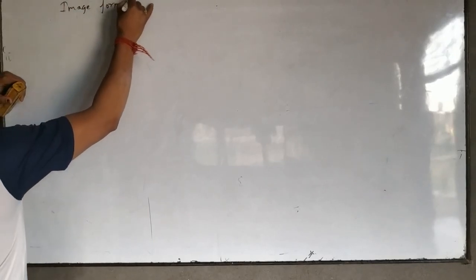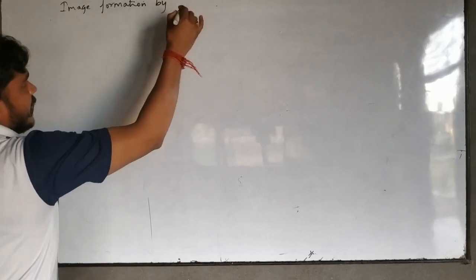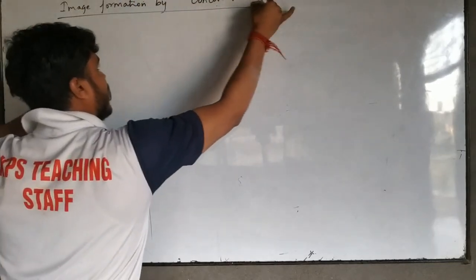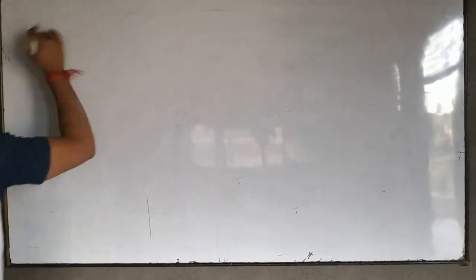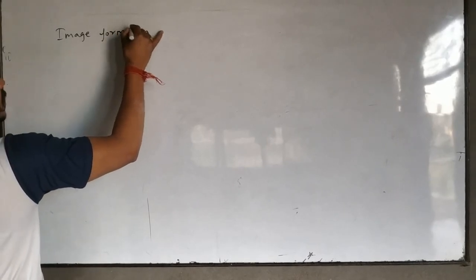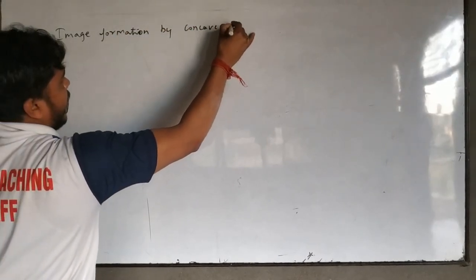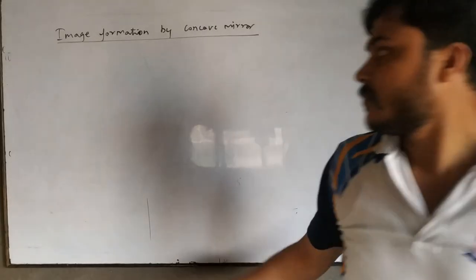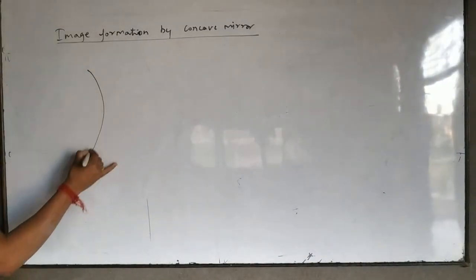Image formation by concave mirror. There are 2 mirrors — one is the concave mirror and one is the convex mirror. We first study image formation by the concave mirror. For image formation, we need to know the position of the object. Let us suppose this is the concave mirror.